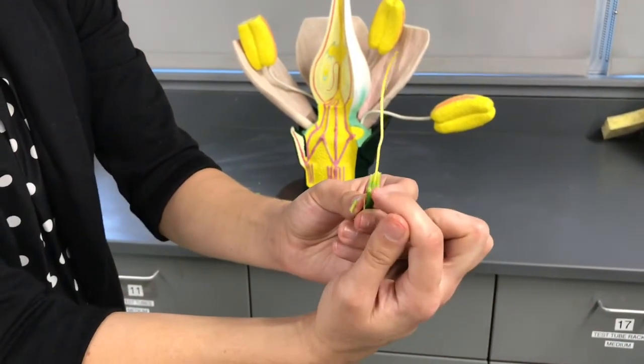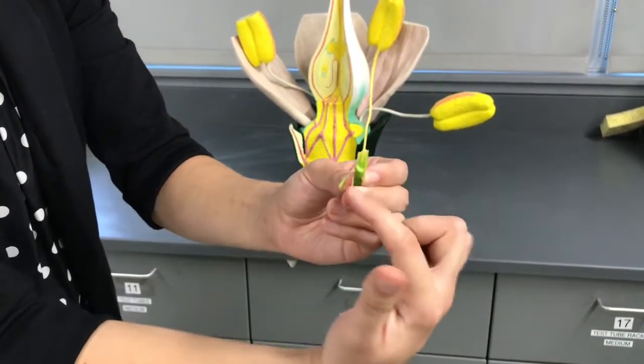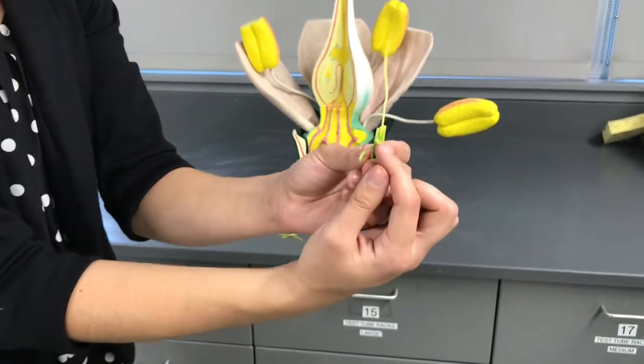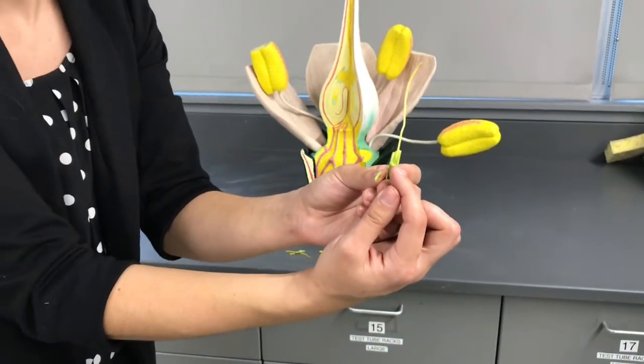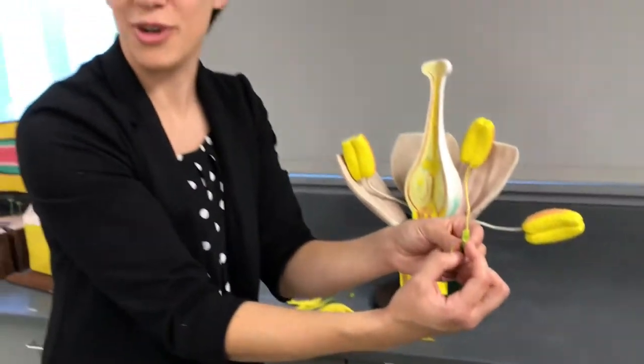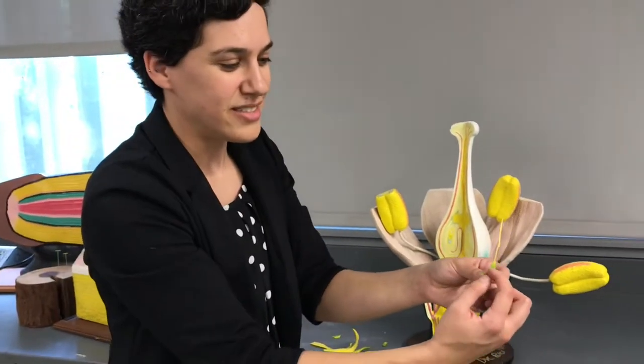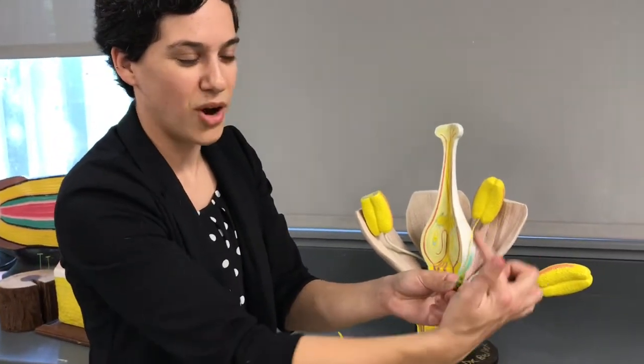That green bulb at the very bottom of this carpel is called the ovary. And that's where the seeds will be made once this flower has fertilization occur.